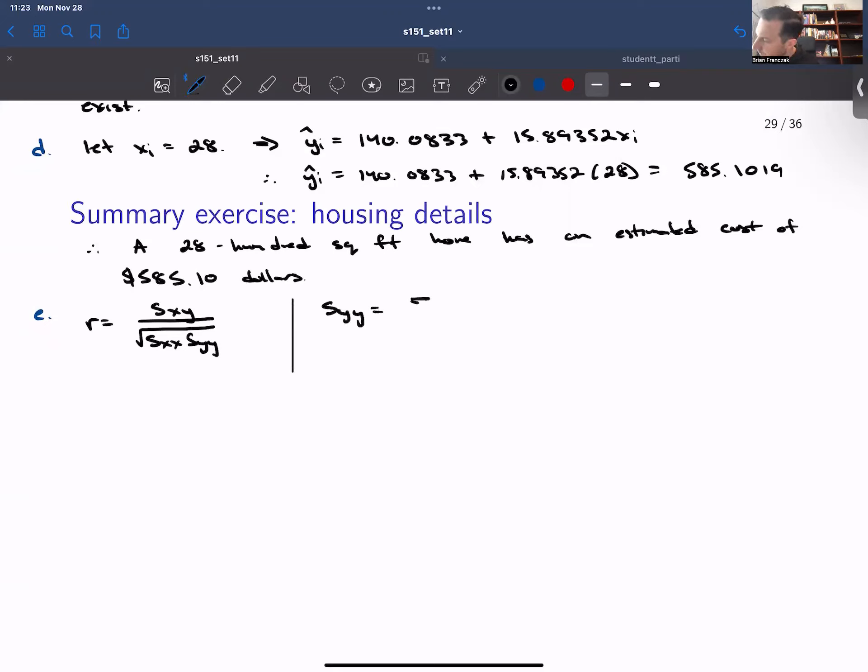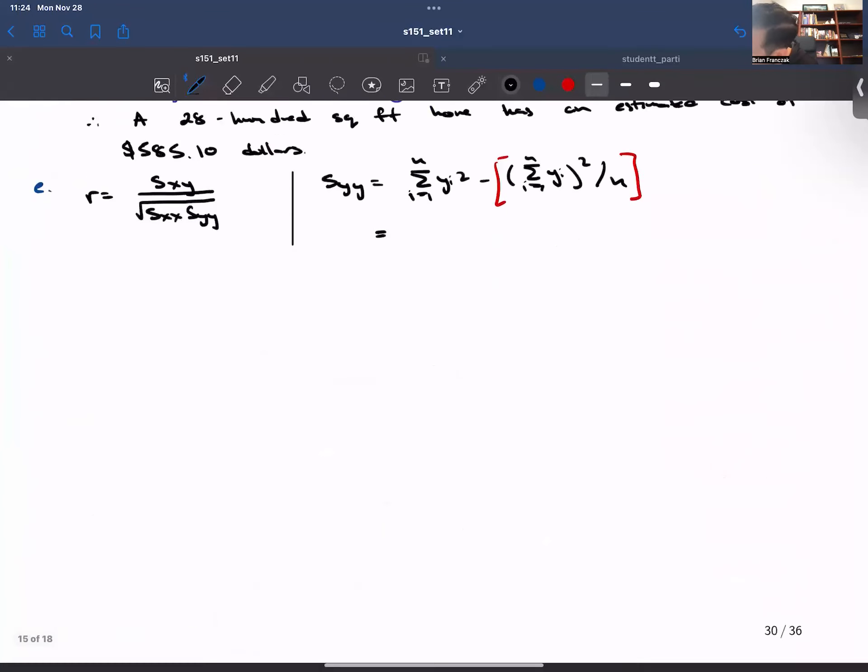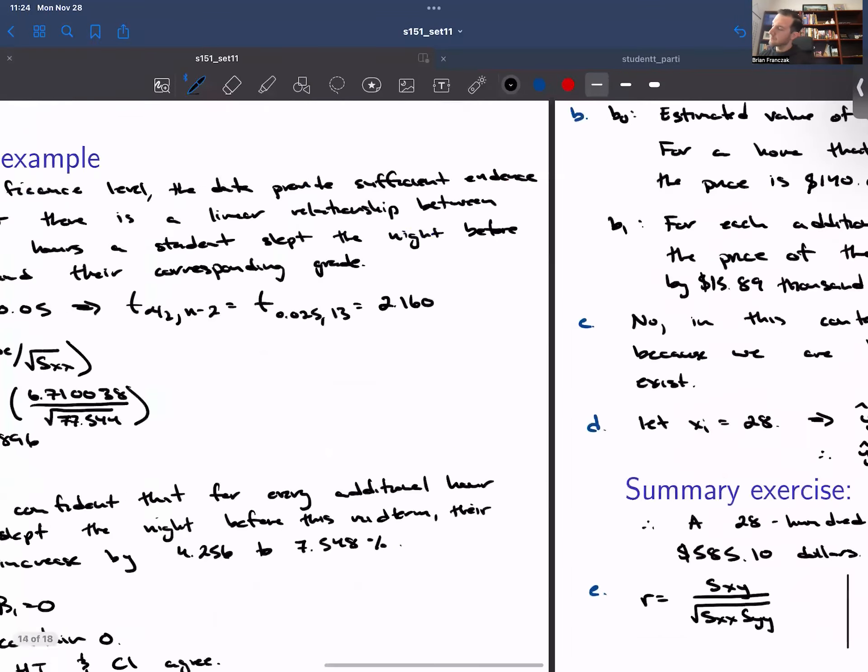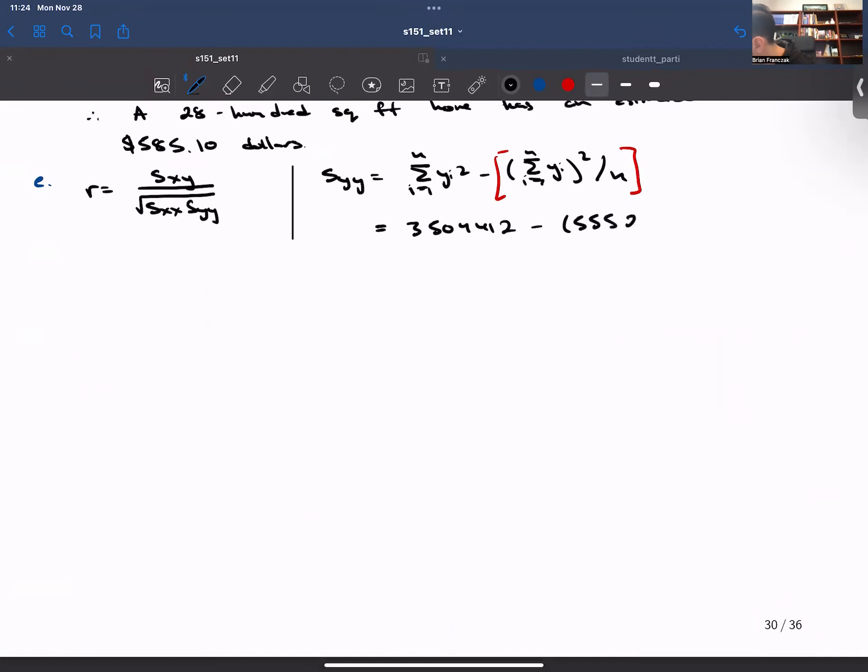So syy is the sum from i equals one to n of the yi squared minus the sum from i equals one to n of yi squared over n. Again, just like before, we want to do this part first. So this is going to be 3,504,412 minus 5552 squared over 9. And this should give us a value of 79,444.89.